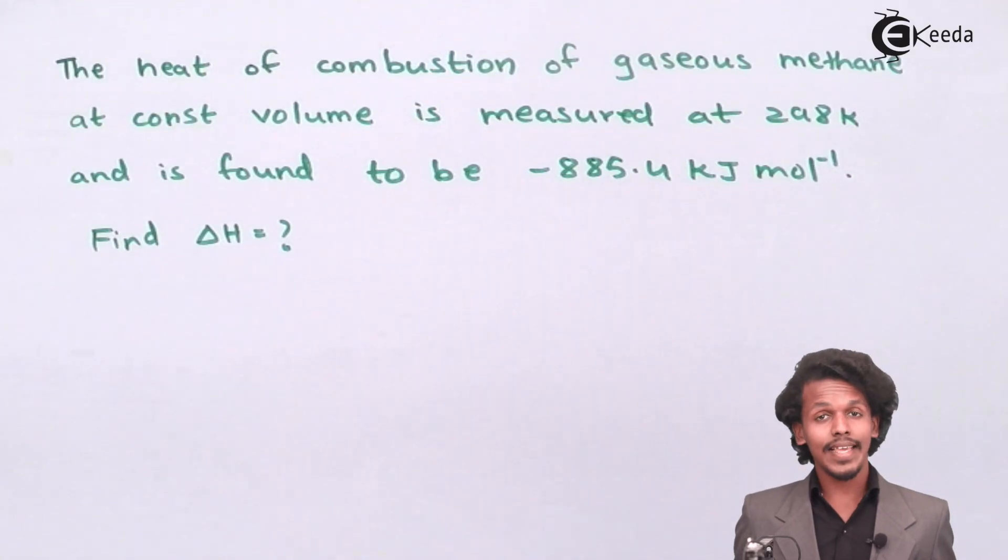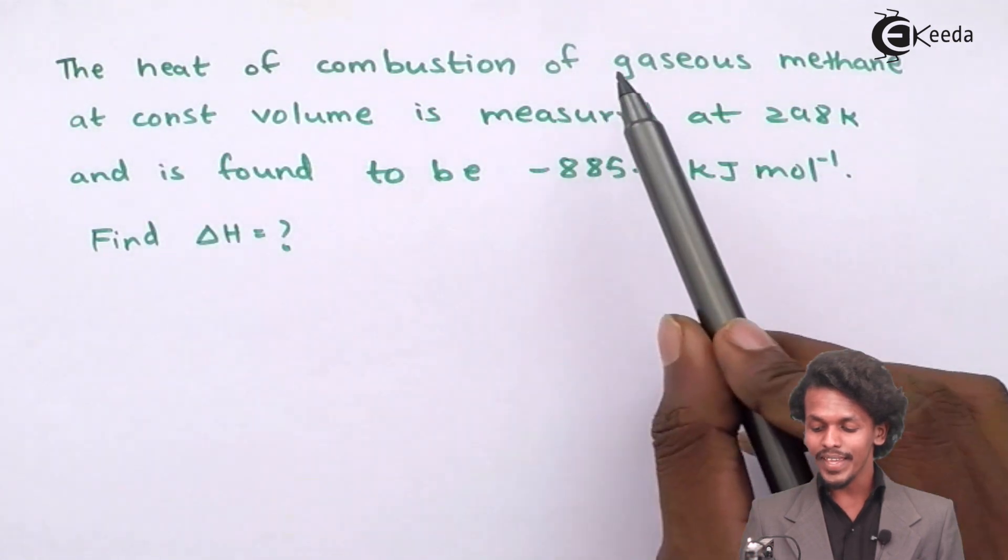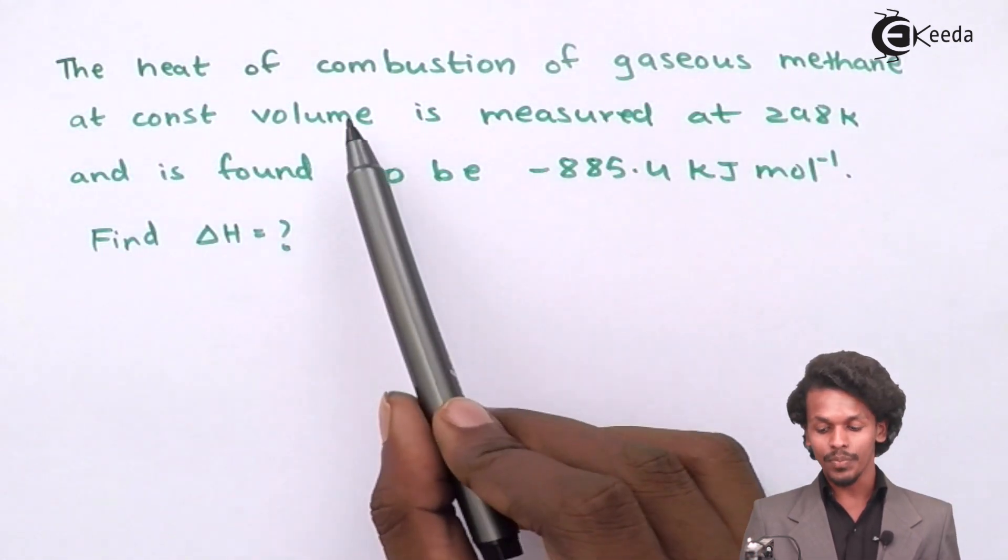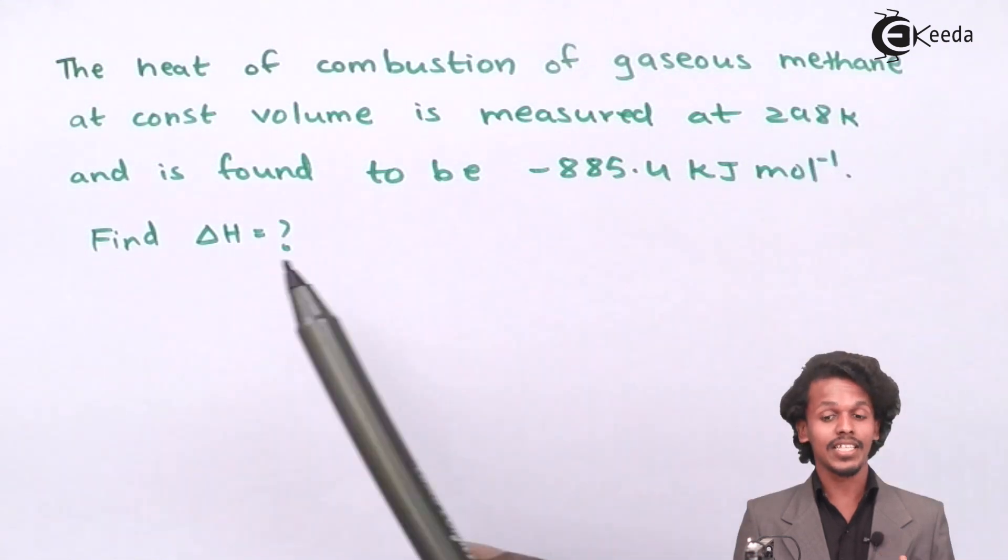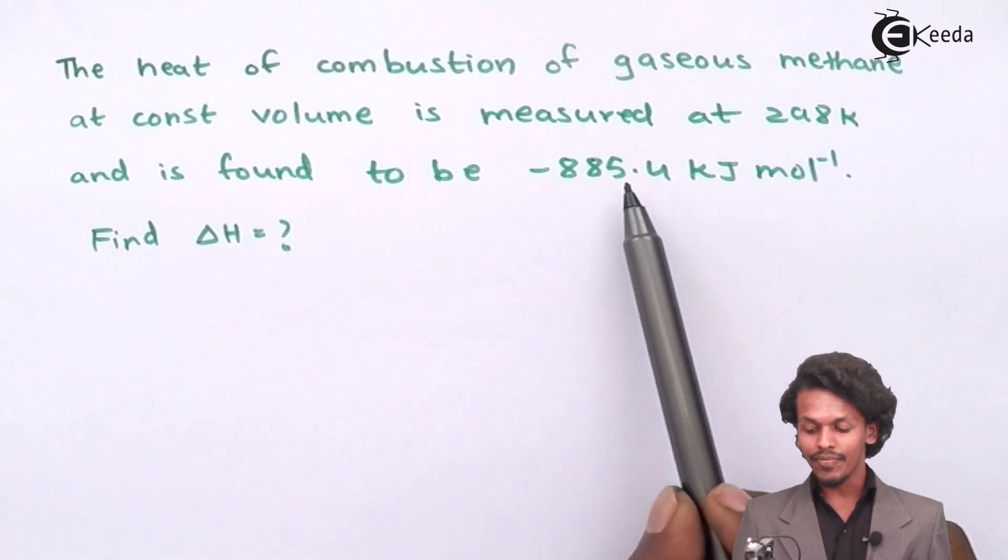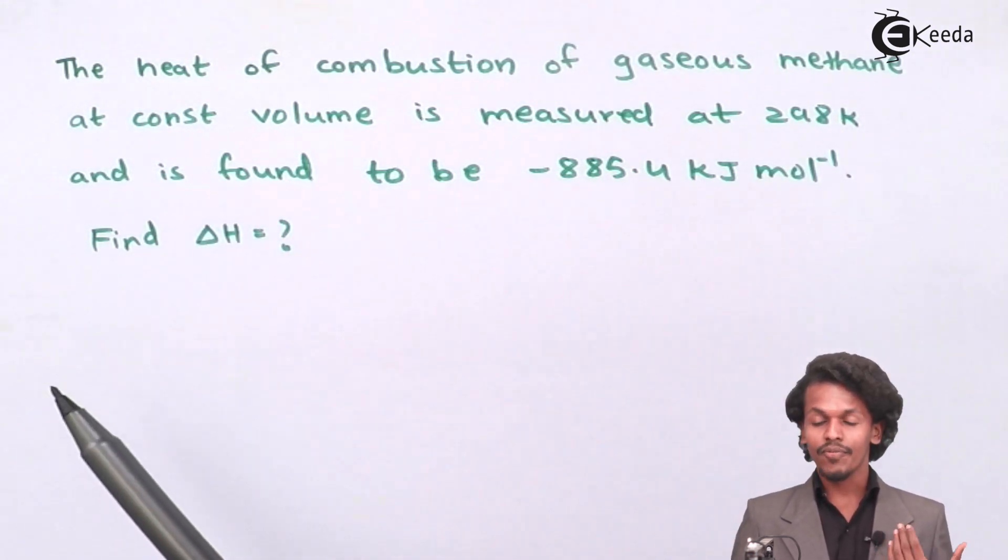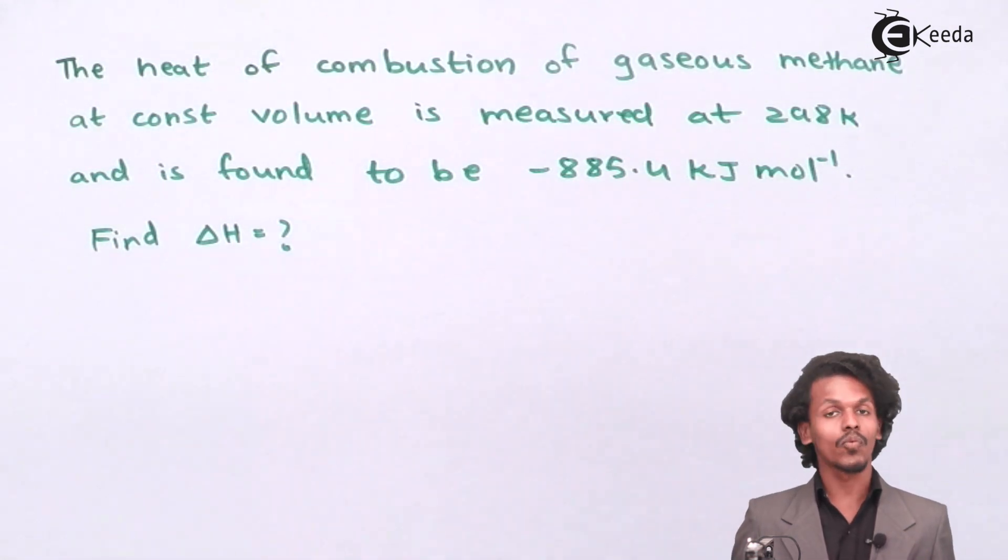The question says that the heat of combustion of gaseous methane at constant volume is measured at 298 Kelvin and is found to be minus 885.4 kilojoules. For that, we have to calculate the value of delta H.